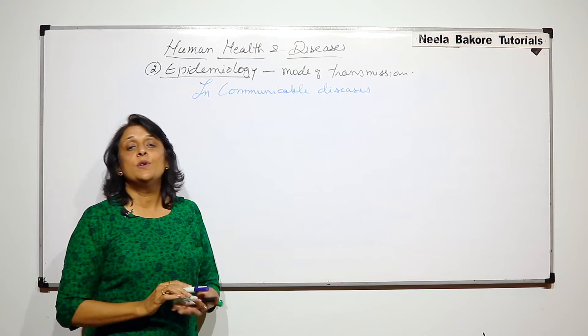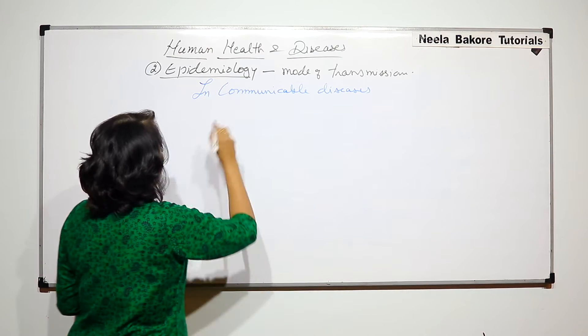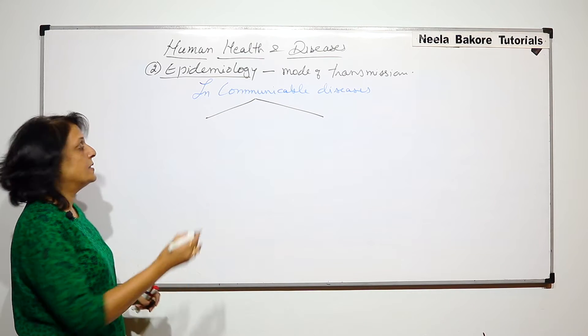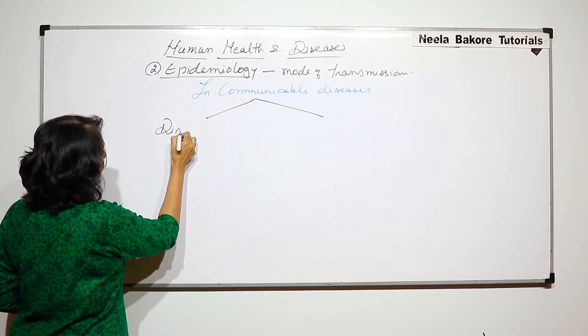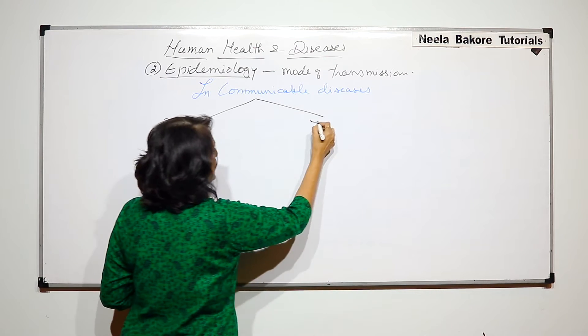Now how do communicable diseases get transmitted? So here there are two possible methods or ways. One is called direct transmission and the other is indirect.